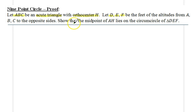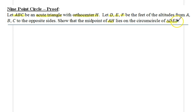We would like to show that the midpoint of AH lies on the circumcircle of triangle DEF. Similarly, we can show analogously that the midpoint of BH and the midpoint of CH also lie on that circumcircle of triangle DEF. Triangle DEF is the pedal triangle — the triangle constructed by using the feet of the altitudes.